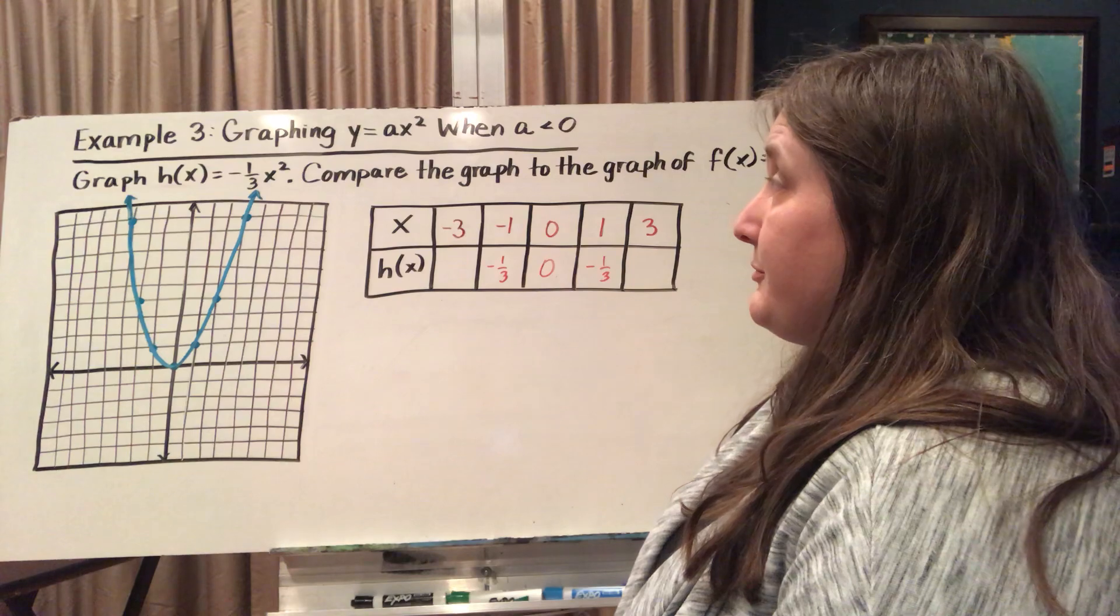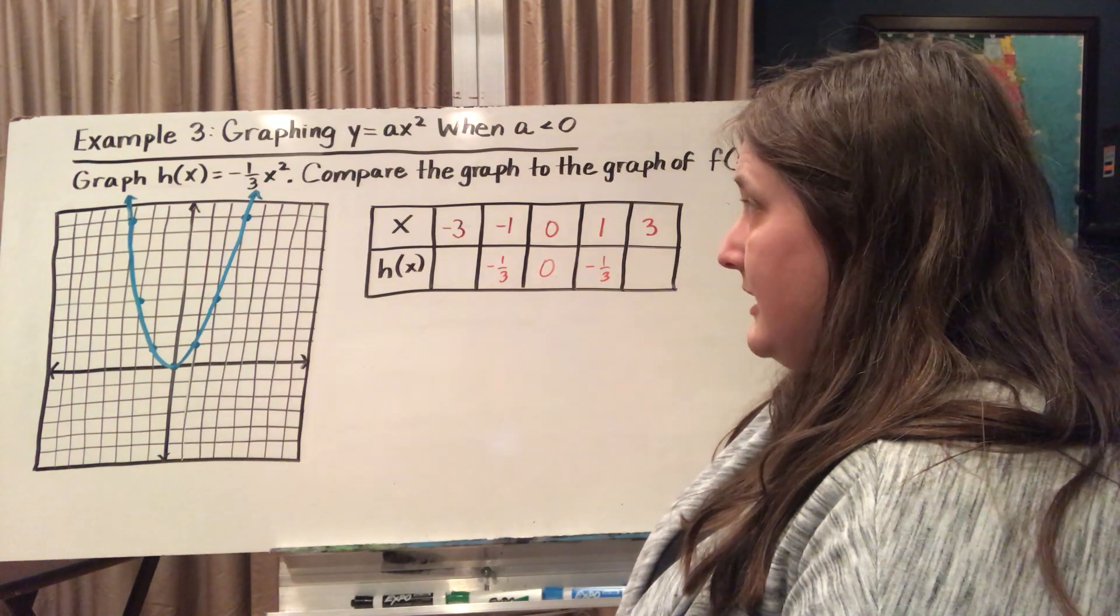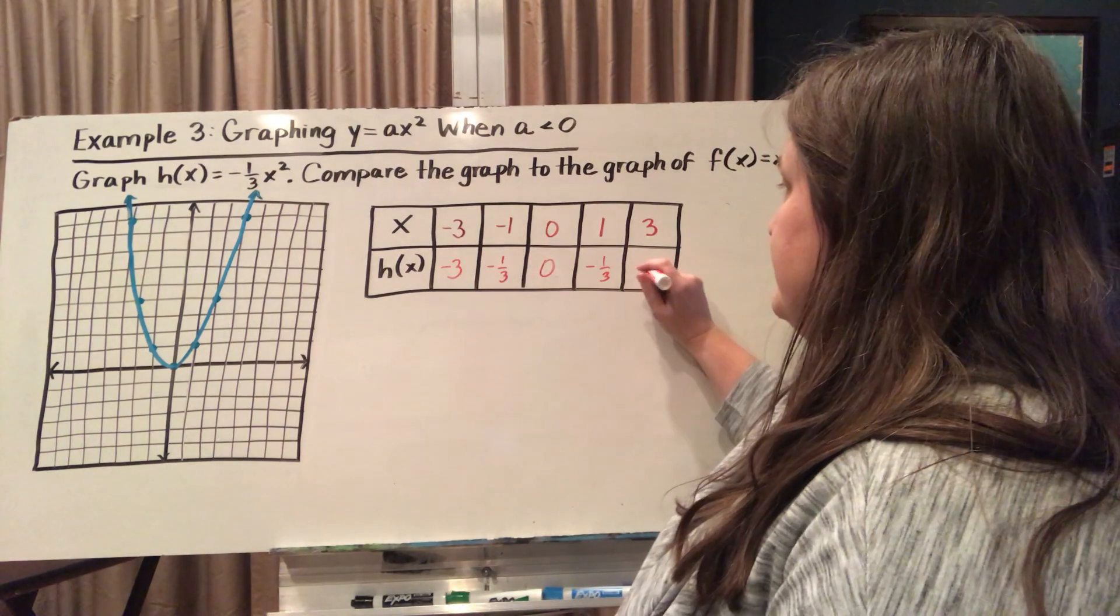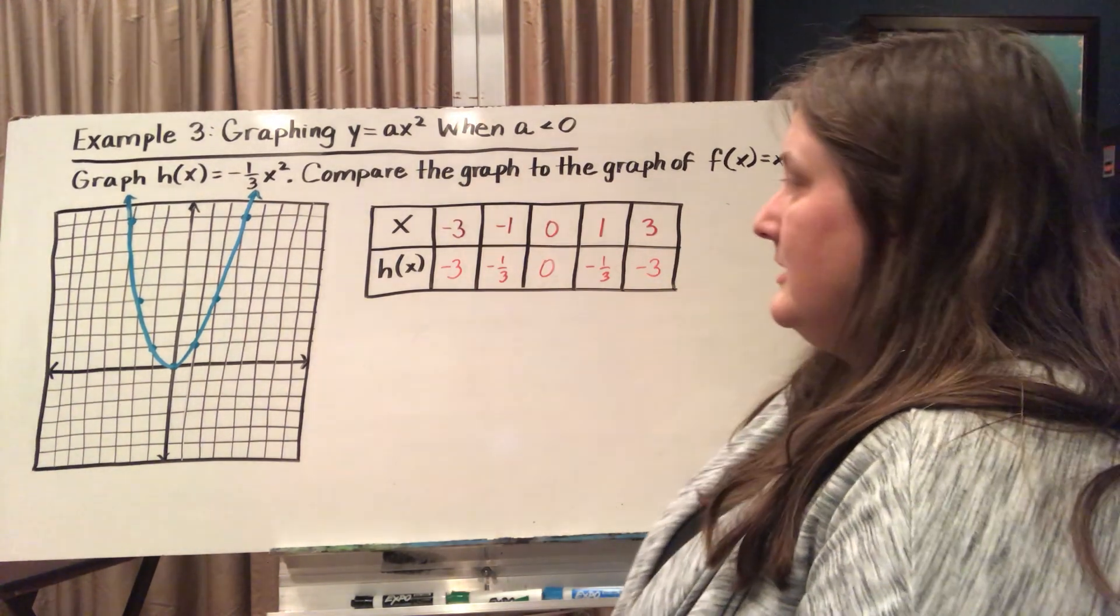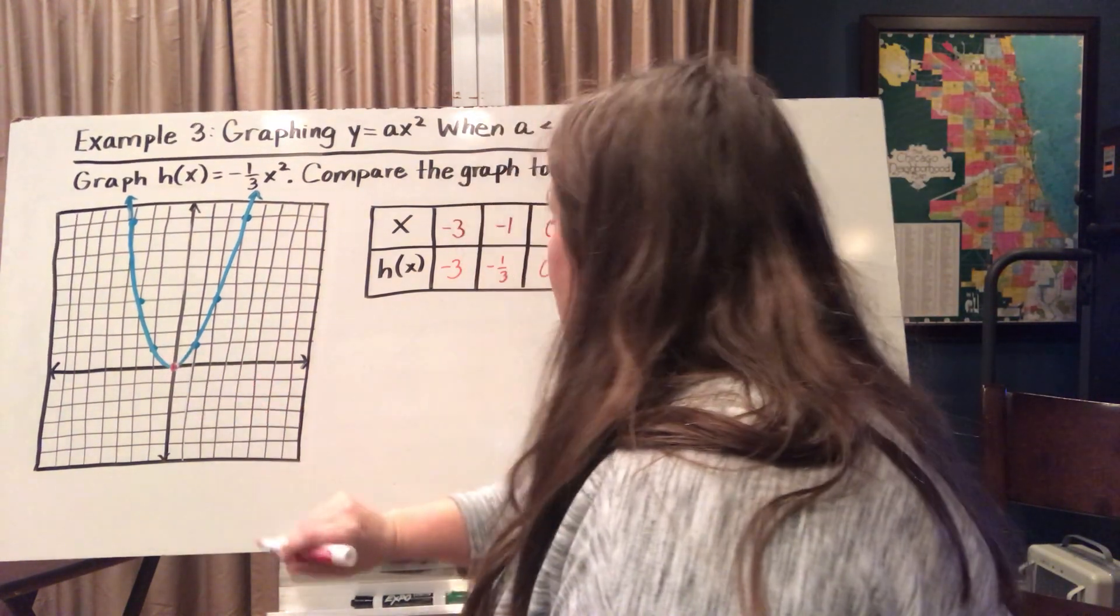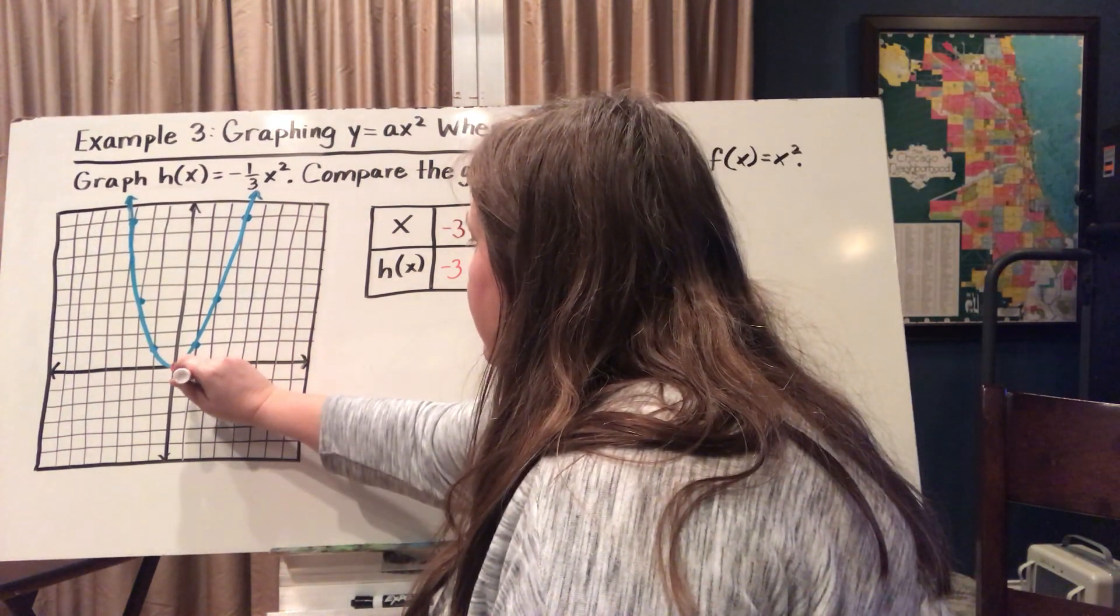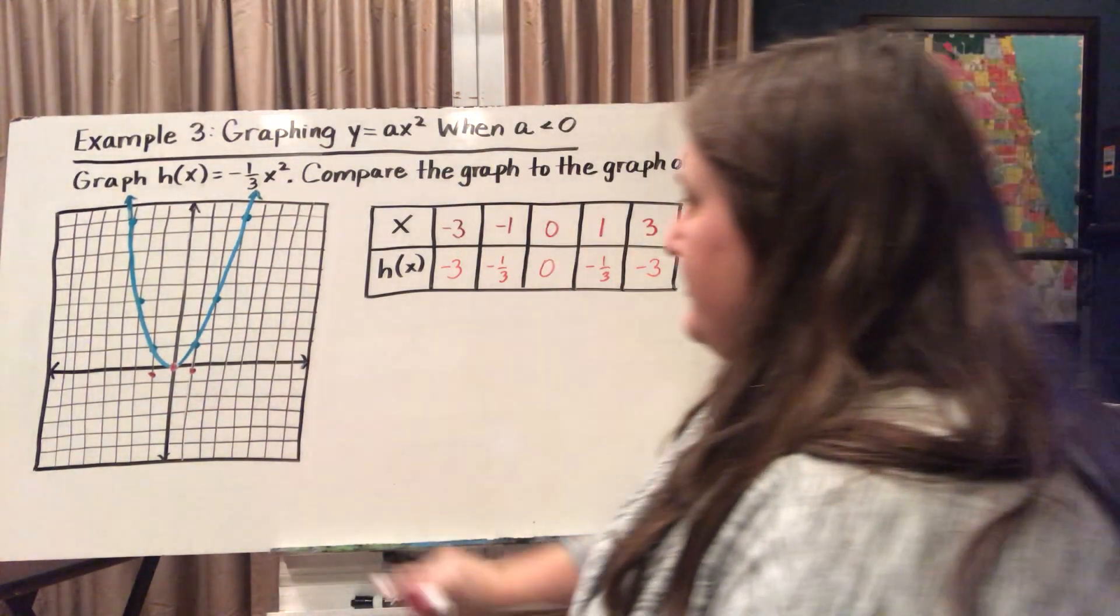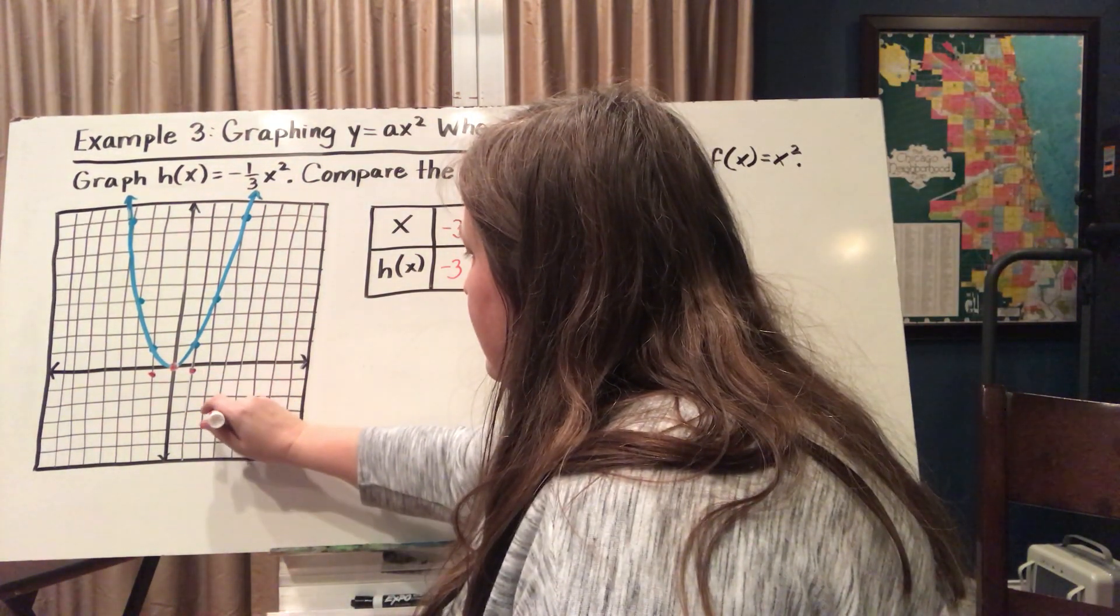If I plug in 3 or negative 3, I'm going to get negative 3. Alright, so I'm going to graph these. It's got 0, 0, 1 and negative one-third, which I'm just estimating there. And 3 and negative 3.